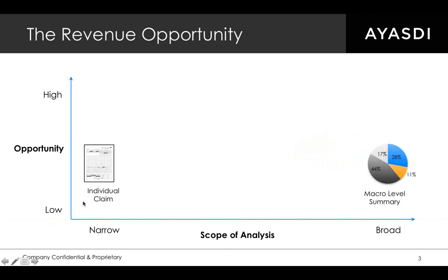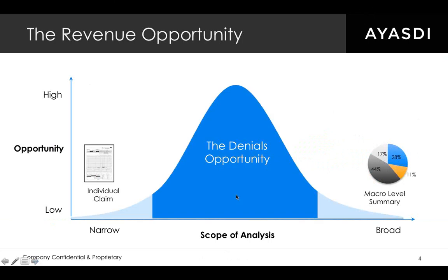Your other alternative is a narrow micro approach — having a person review individual claims and look for patterns. People are good at spotting patterns, so they are going to find some, like these 10 claims were miscoded in the same way, or people at this facility don't seem to be following our pre-certification procedures. Those are nice patterns, but they're anecdotal and they're local. Were they caused by somebody having a bad day? Are they going to happen again next month? You get these specific answers, but you don't know if they will generalize. The macro level and micro level analyses each have their place, but ultimately they're both very limited. The kind of denials pattern you actually want is somewhere in the middle — that's where most of the opportunity for addressing denials is.